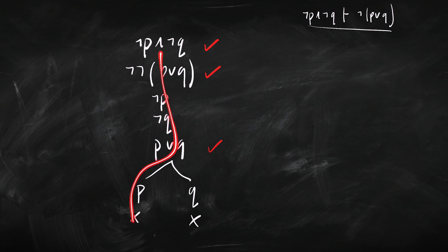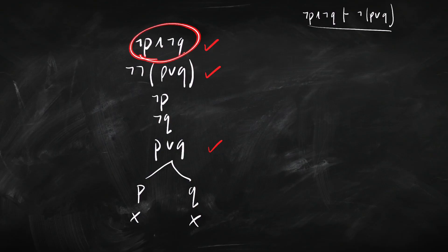Okay, two branches on this tree. There's one branch, there's another branch, but they both close, so that is a closed tree. That is a proof from here to here. So the premise does prove the conclusion. That was a super simple example. Let's look at our second example.